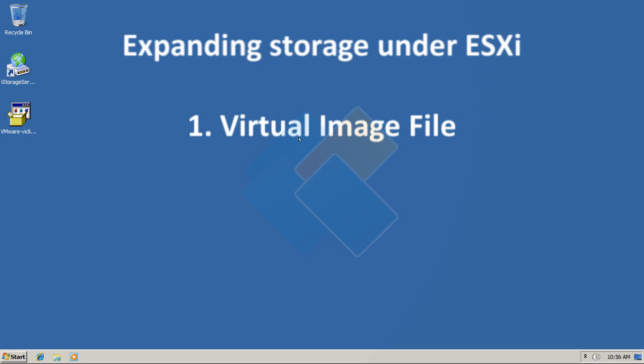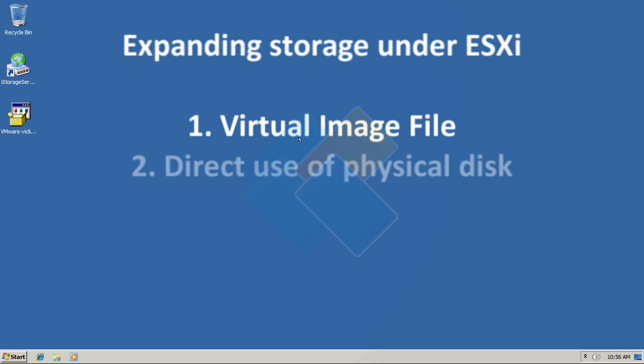The second way is direct use of a physical disk partition of a Windows Server. That will help to make good use of available resources since no additional configurations are needed. Simply adding the storage media as an iSCSI target is enough.